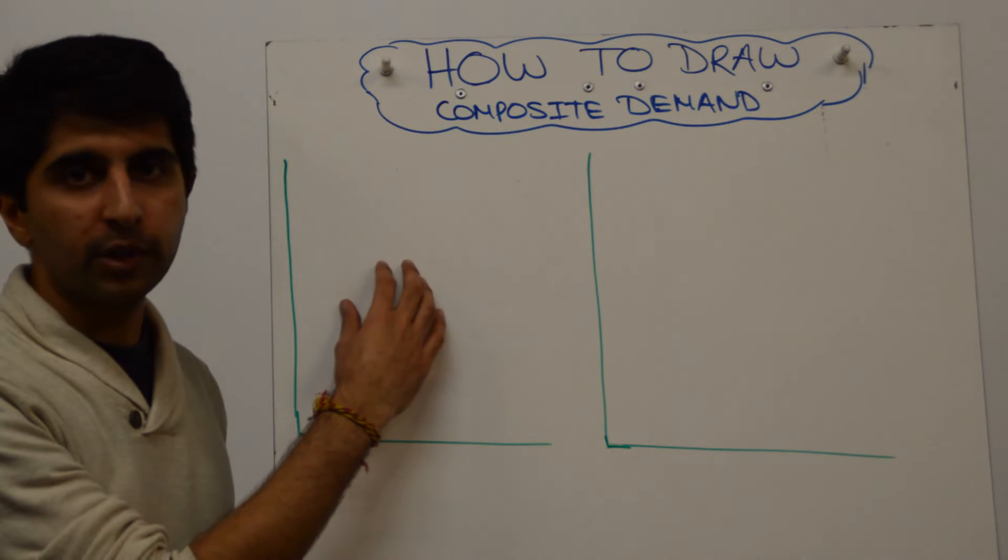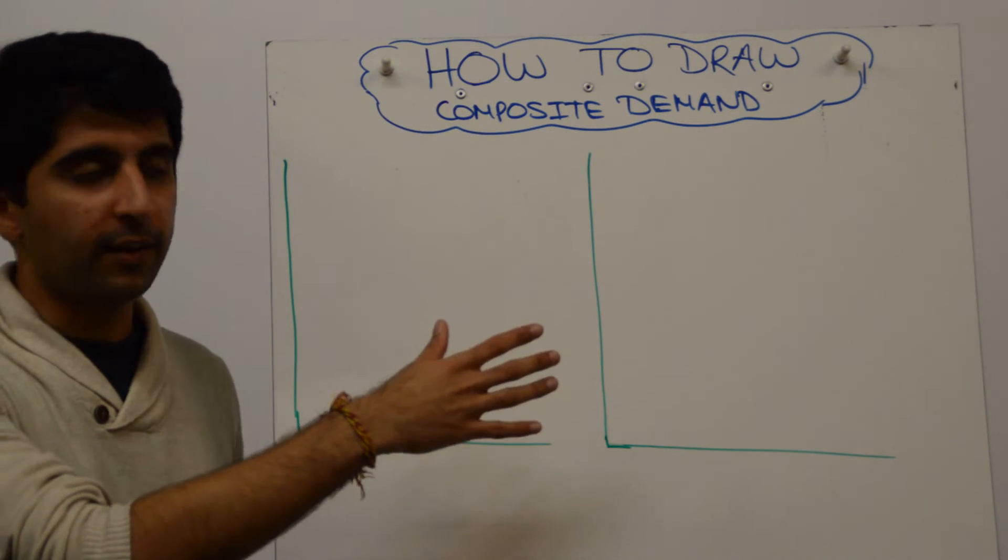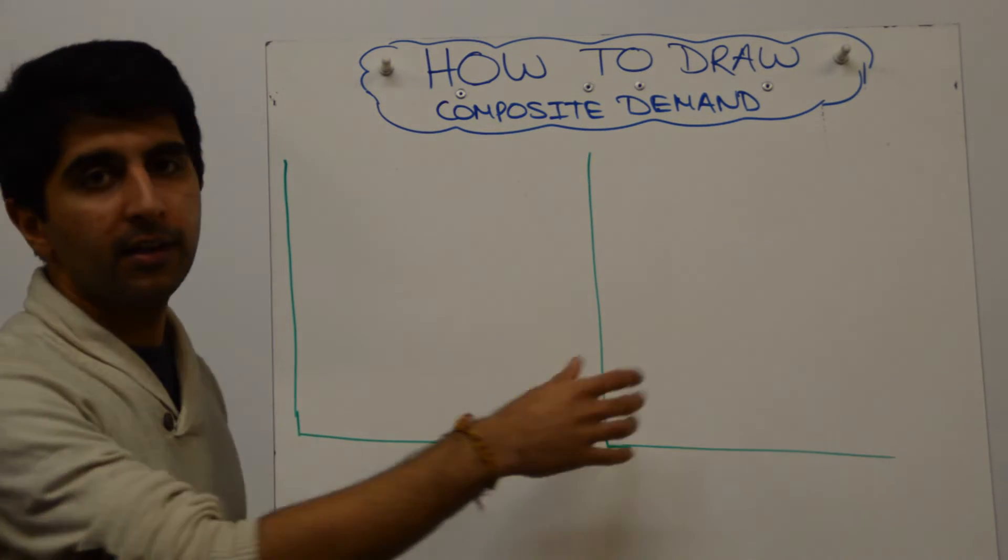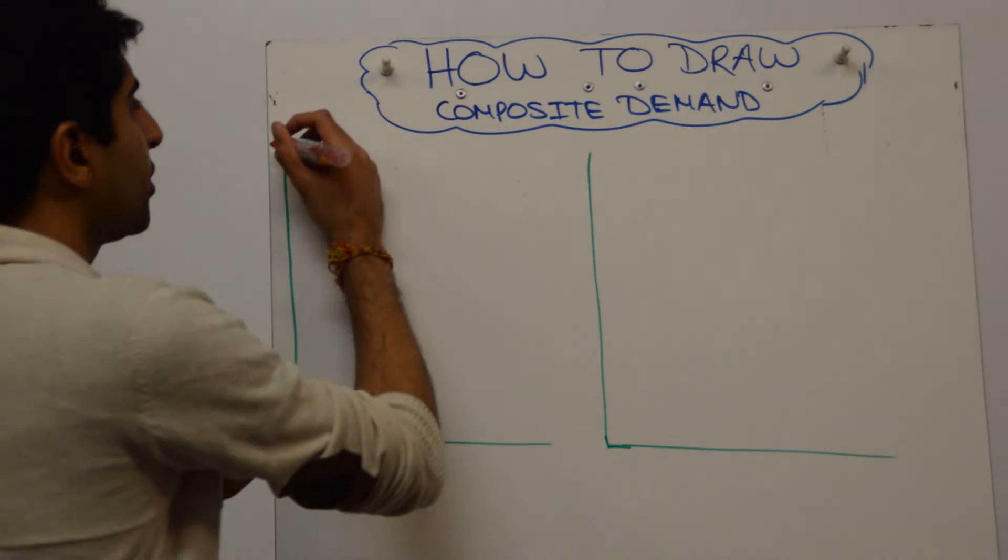Right? So when demand for one good goes up, supply there will decrease because there'll be less input, so less wheat available to make and to produce livestock feed. So on a diagram, how do we show that?